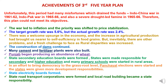There was a welcome surge in the economy and an increase in agriculture production brought India near to self-sufficiency in food grains, but rural disparities increased. Construction of dams continued and many cement and fertilizer plants were built. Punjab began producing an abundance of wheat. State Secondary Education Boards were formed, states were made responsible for secondary and higher education, and many primary schools were started in rural areas. Panchayat elections were started and states were given more development responsibilities. State Electricity Boards and State Road Transport Corporations were formed, and local road building became a state responsibility.